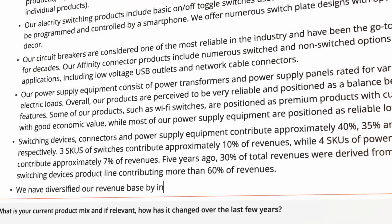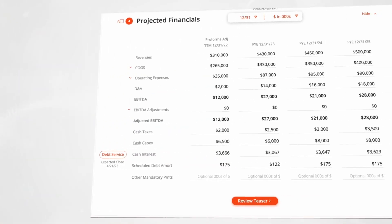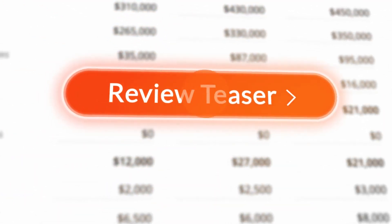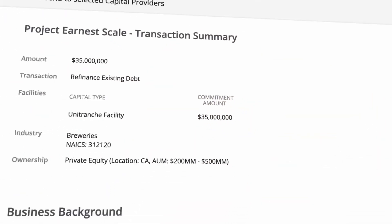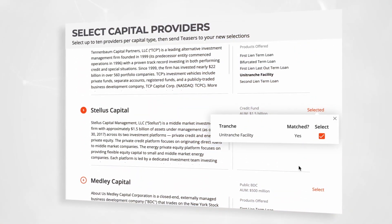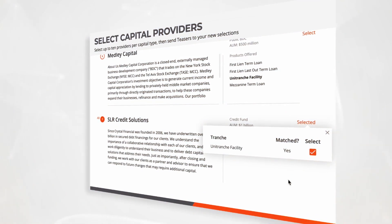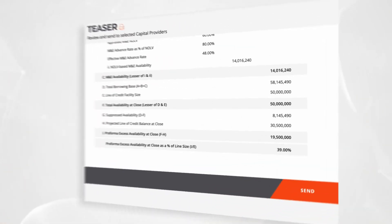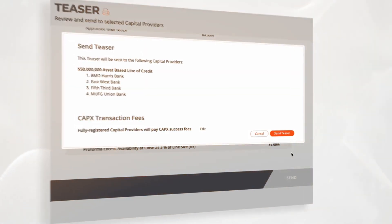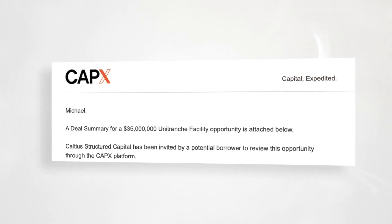Fill out company descriptive prompts and CapEx algorithms will generate a detailed credit memo based on your responses. In a couple of clicks, send your credit memo to lenders of your choice. On CapEx, you always control your information and who receives it.